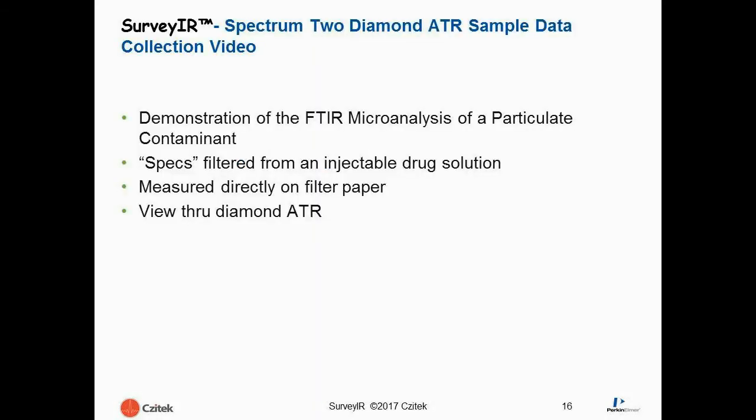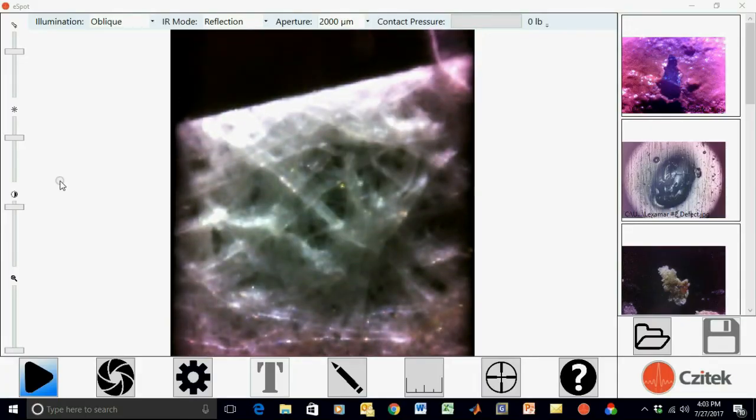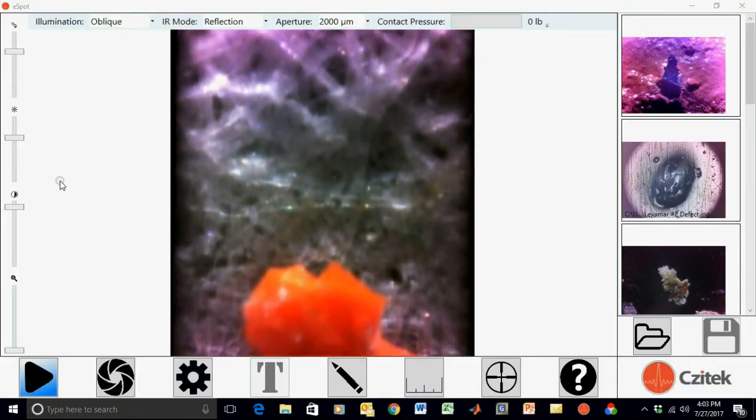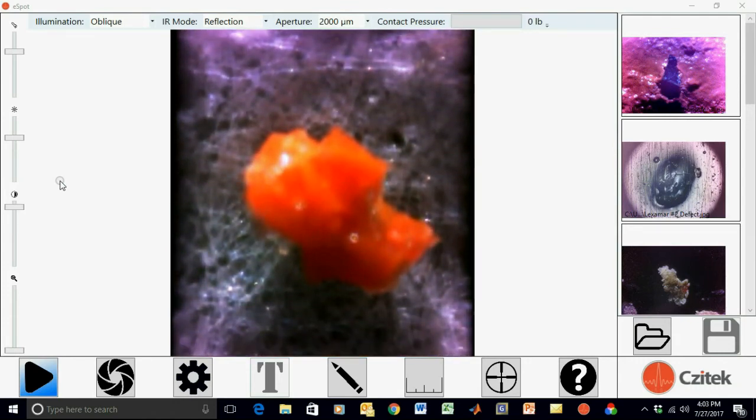We'll now demonstrate a sample analysis using Surveyor with Spectrum II. In this case, we'll analyze a particulate contaminant isolated from an injectable drug solution. Small particles barely visible to the human eye were filtered from the solution and measured directly on filter paper. We used the view-through Diamond ATR in this analysis. The filter paper sample was mounted on a low-E glass slide and placed on Surveyor.